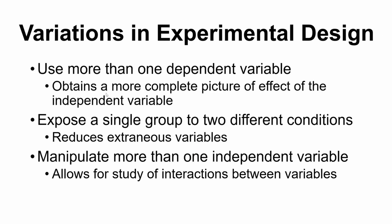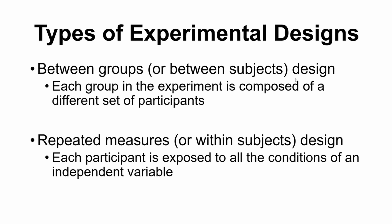Our second point is to expose a single group to two or more different conditions. You would have a single group of individuals who receive multiple types of treatments. This is really neat because it helps reduce the potential for extraneous or confounding variables. This is the difference between what we can call between-groups or between-subjects designs and repeated-measures or within-subjects designs.